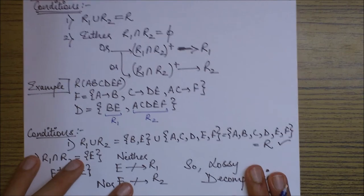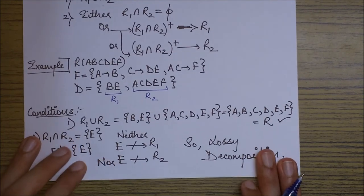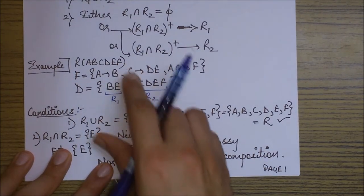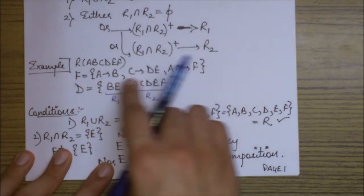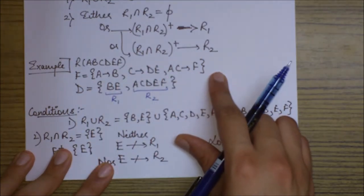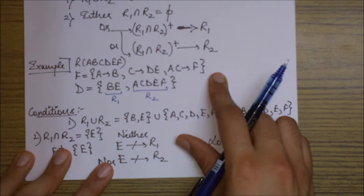So this is an example. We have this relational schema ABCDEF. We have this functional dependency set: A goes to B, C goes to DE, AC goes to F.